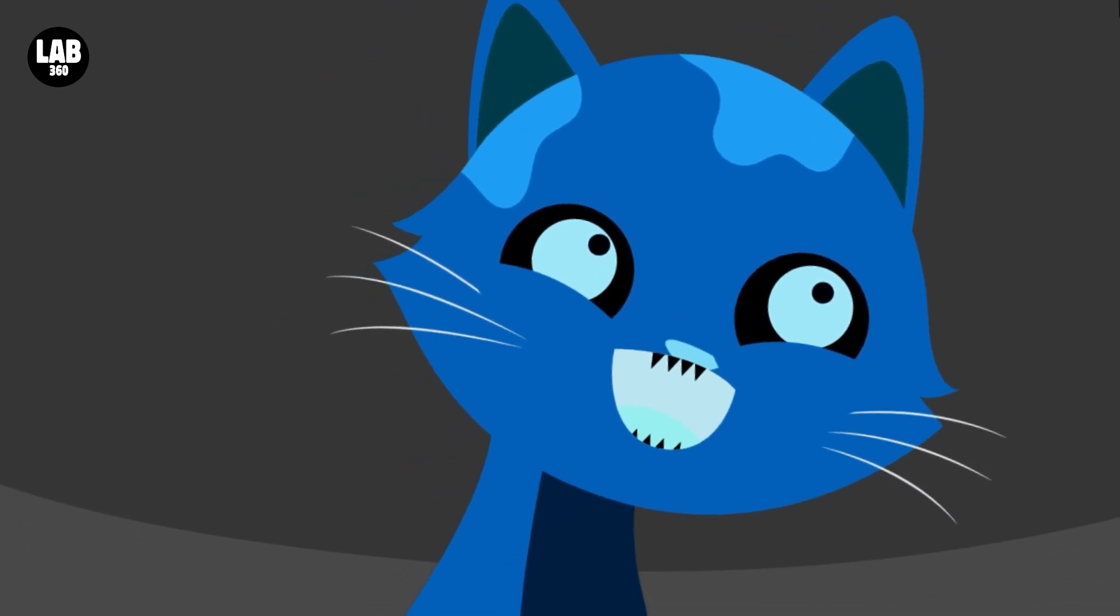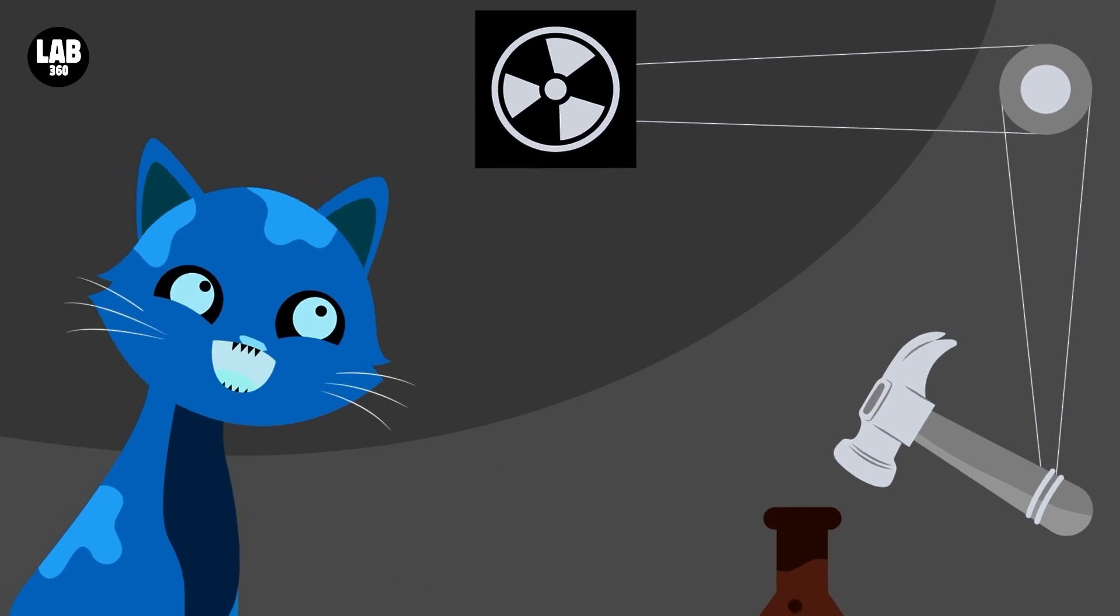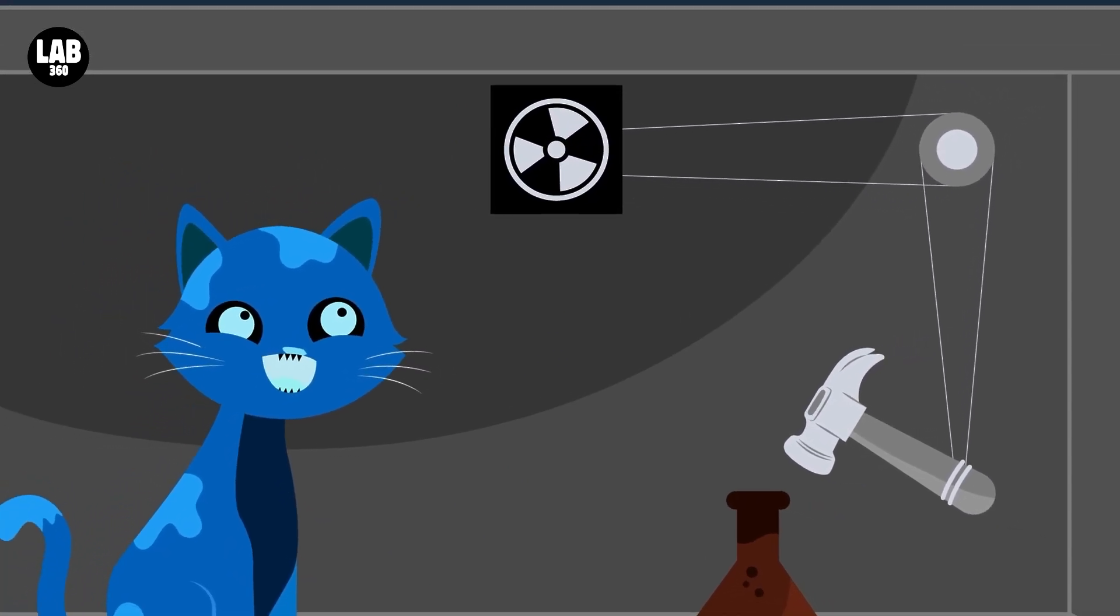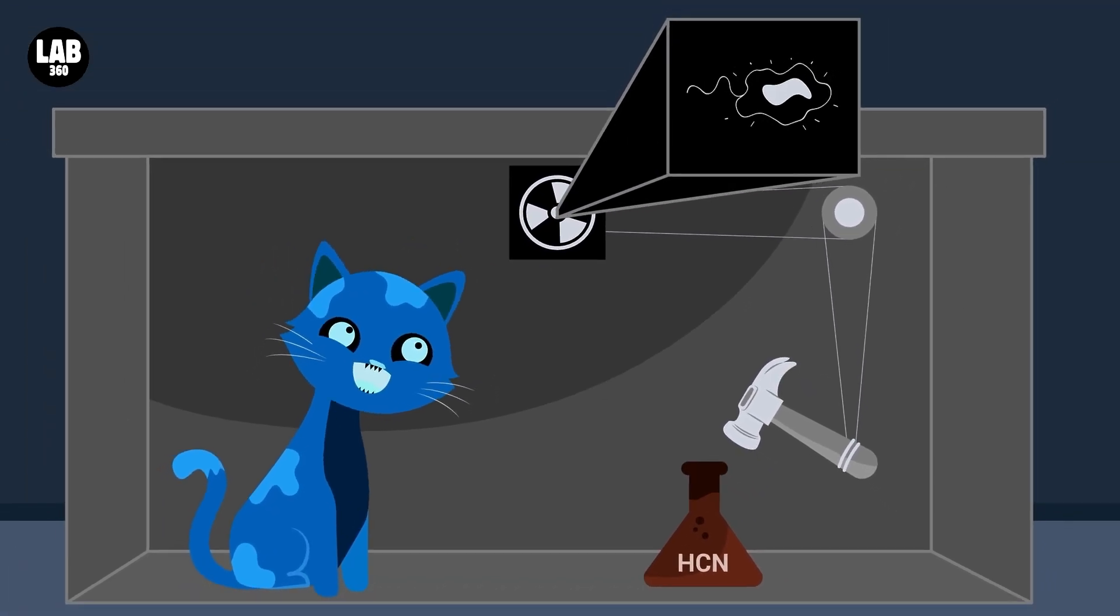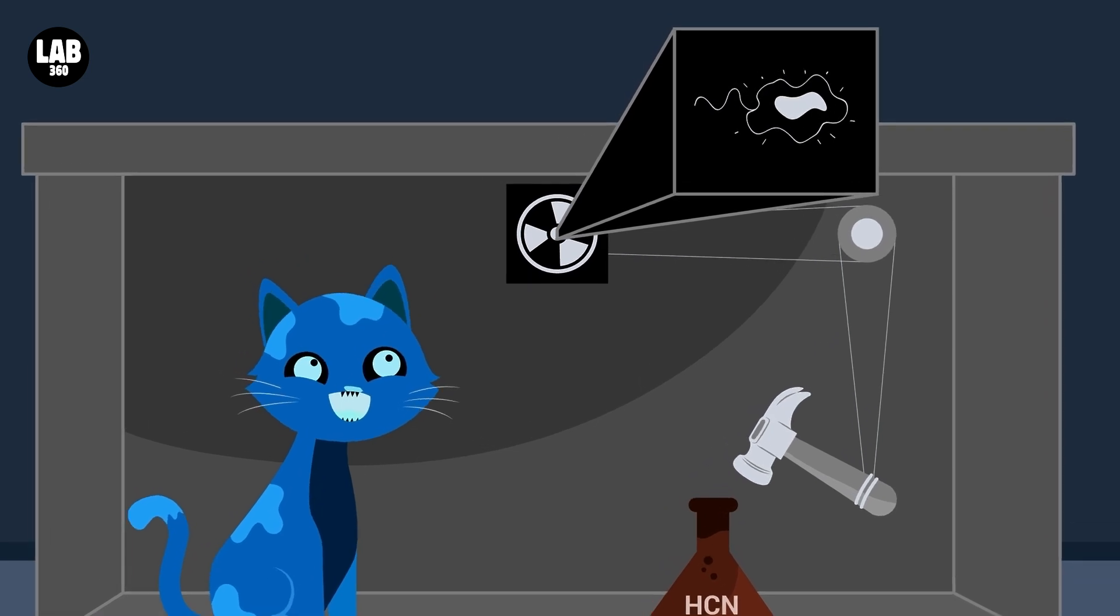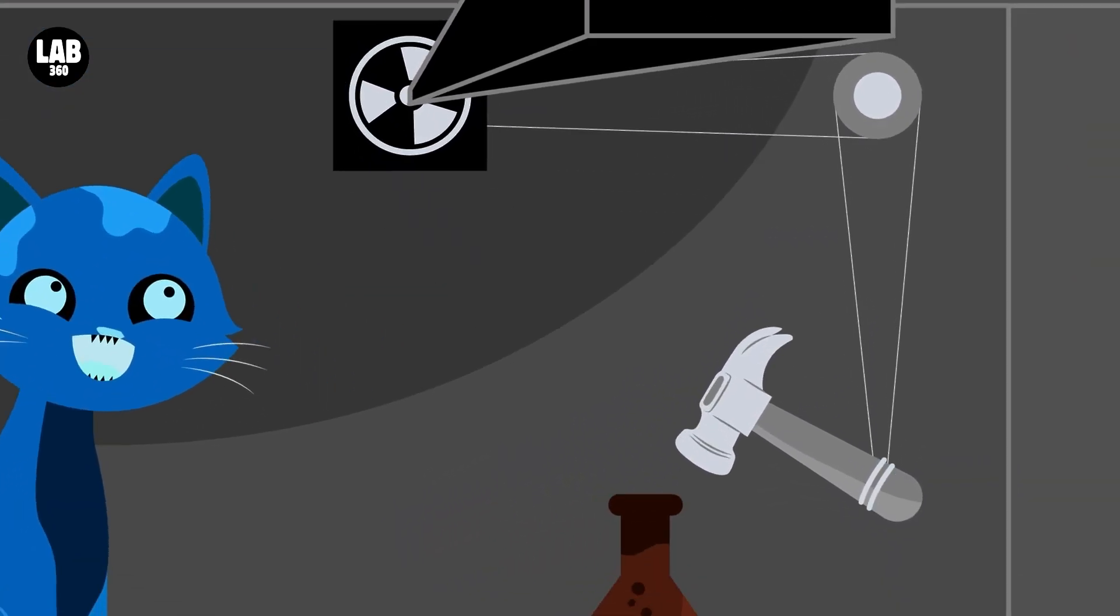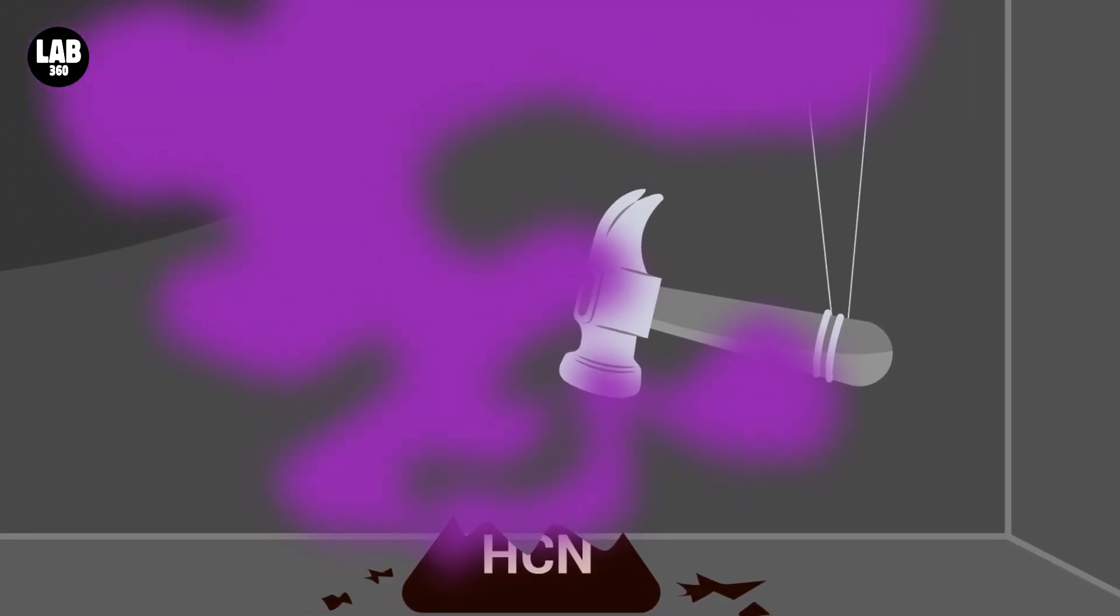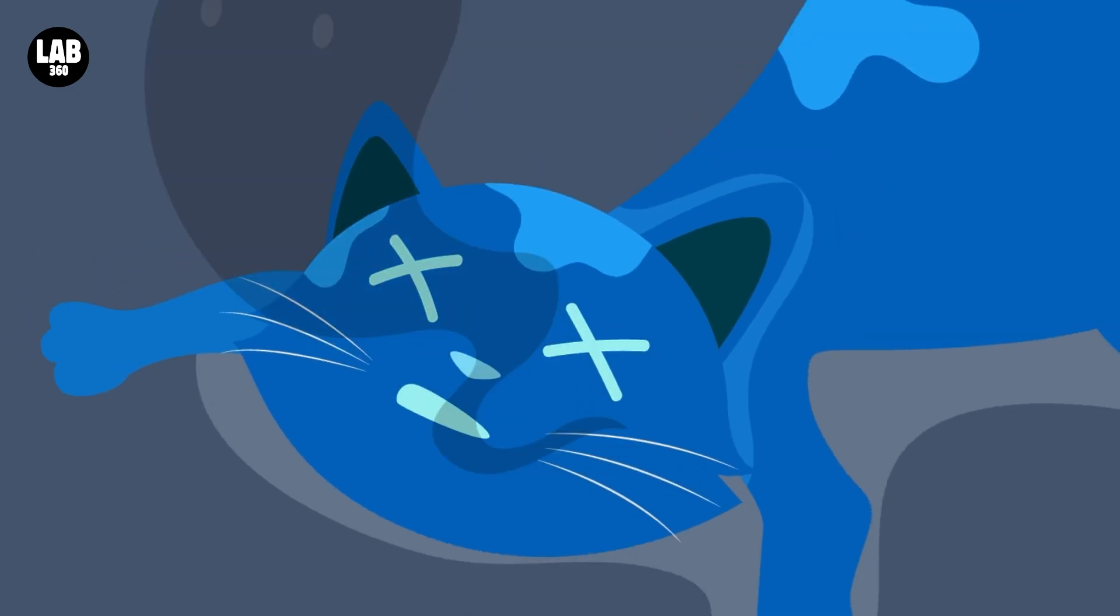Here is a simplified version of the thought experiment. A living cat is placed into a steel chamber along with a hammer, a vial of hydrocyanic acid, and a very small amount of radioactive substance. If even a single atom of the radioactive substance decays during the test period, a relay mechanism will trip the hammer, which will in turn break the vial of poisonous gas and cause the cat to die.